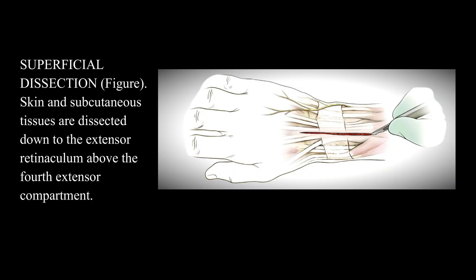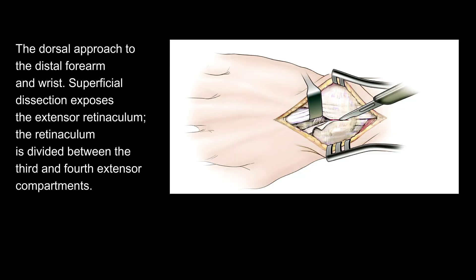Superficial dissection: skin and subcutaneous tissues are dissected down to the extensor retinaculum above the fourth extensor compartment. The dorsal approach to the distal forearm and wrist — superficial dissection exposes the extensor retinaculum. The retinaculum is divided between the third and fourth extensor compartments.